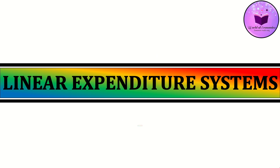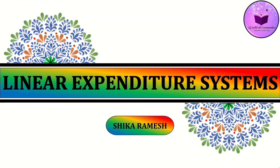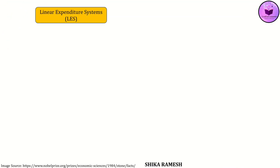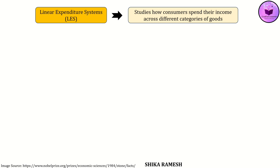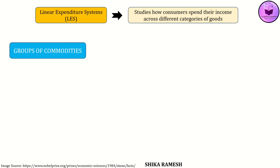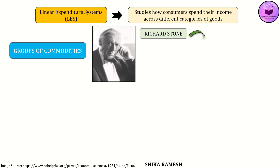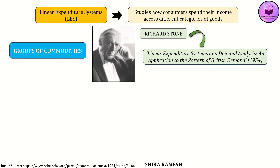Hello friends, in today's video, we shall understand the concept of linear expenditure systems. Linear expenditure systems, or LES, is a model used in economics to study how consumers spend their income across different categories or bundles of goods. It was put forward by Richard Stone in his work 'Linear Expenditure Systems and Demand Analysis: An Application to the Pattern of British Demand', published in the Economic Journal in 1954.